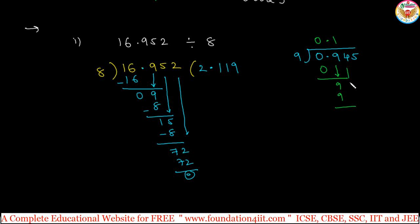Next, 4, 5. Take one more digit and put the point. 9 into 45 is 5. Normal divisions only, but when you are taking the digit just after the point, you also keep the point in the quotient. This is the method.